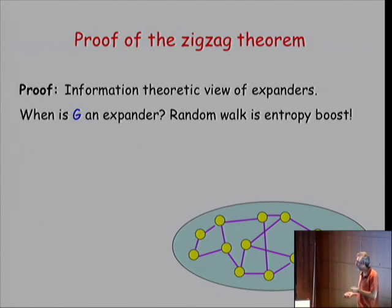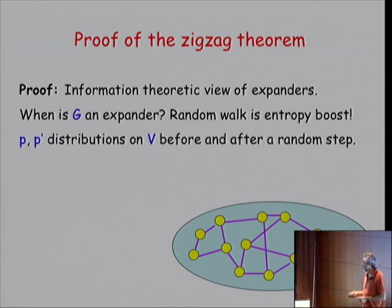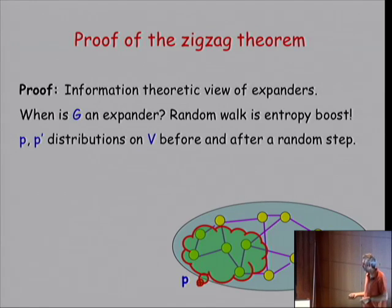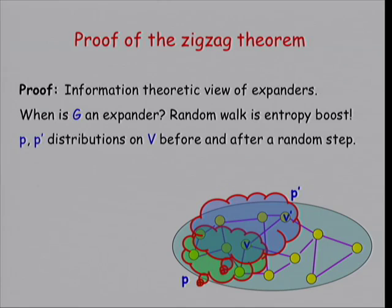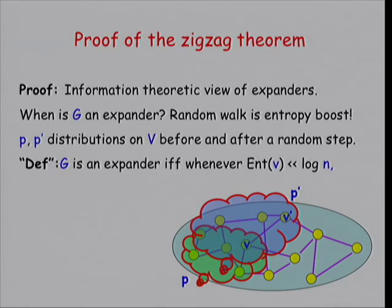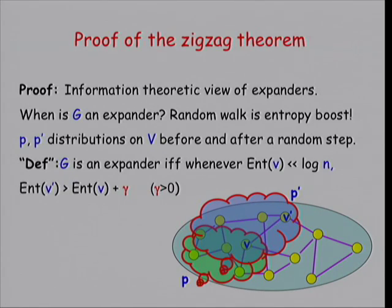Here's a graph. We have two probability distributions — one before we make a random step and one after. V is a random vertex sampled from distribution P. We take a random step, creating a new distribution P prime. A graph is an expander if no matter what the distributions are, as long as the first distribution is not already uniform, the entropy of V prime — the new distribution — increases by some constant amount. You inject log D bits of entropy from the random neighbor, and you gain it in the distribution.